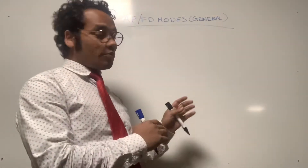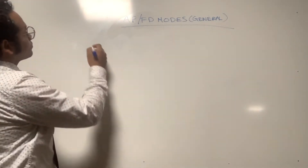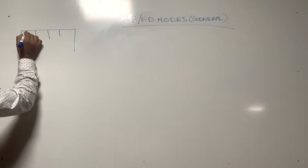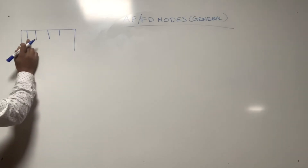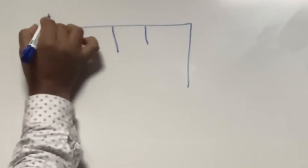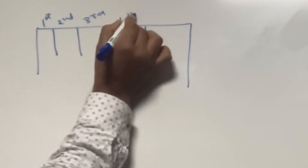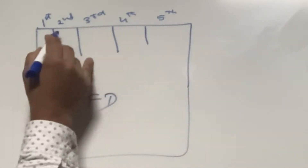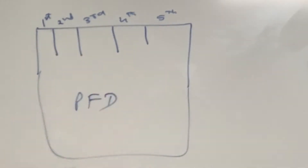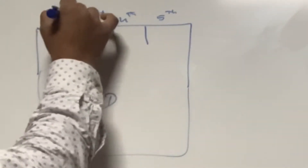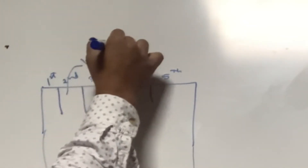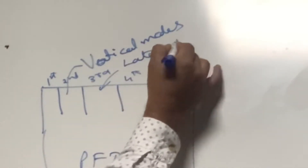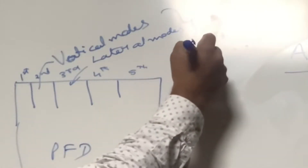Before starting the topic, let us recall what we discussed in my previous session. On the PFD there are five columns. Today we are going to discuss what FMAs will appear in the second column and third column. The second column is for the vertical modes and the third column is for the lateral modes of autopilot and flight director.